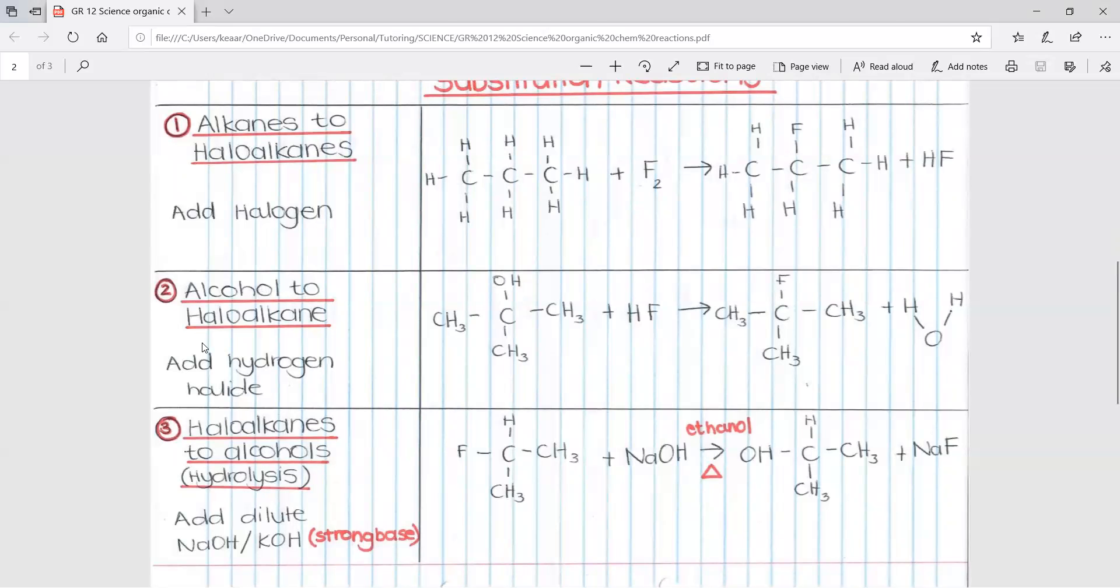And the second one is alcohol to haloalkane. This one we add a hydrogen halide. Here is an example. The OH is then substituted with the fluorine, like so, and then this OH joins with the hydrogen to form water. So in an alcohol to haloalkane substitution reaction, water is formed. It works best with tertiary alcohols and there must be no major heat added. It's generally best at room temperature.